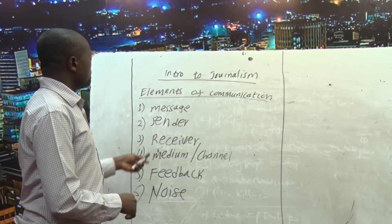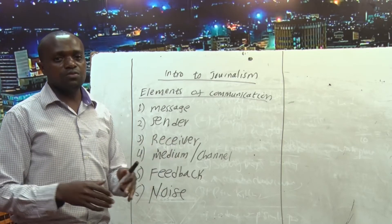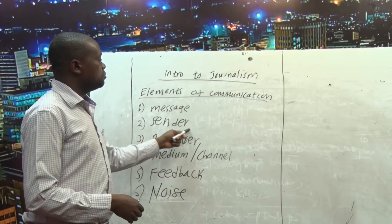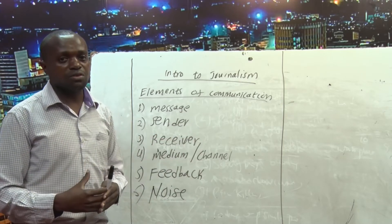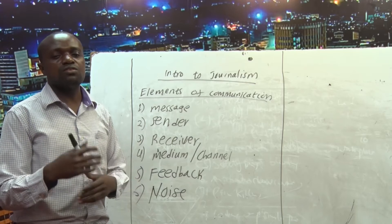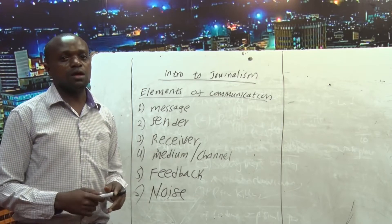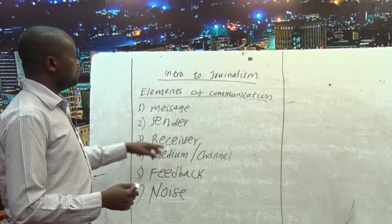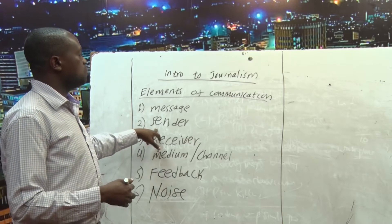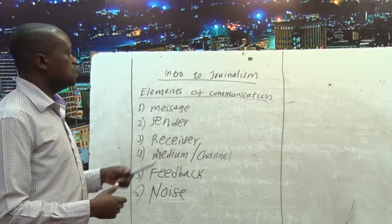The second element is what we call the sender. The sender is someone who packages that particular content, or someone who encodes the message to be sent to the targeted audiences. The sender must be someone who has prior knowledge about the topic of discussion — someone who has an idea. Once you have your idea, you package it, and understanding the nature of your targeted audiences, you send the message to the recipient. There is no way someone can receive a message without someone sending it, so the sender is a very vital element in the communication process.